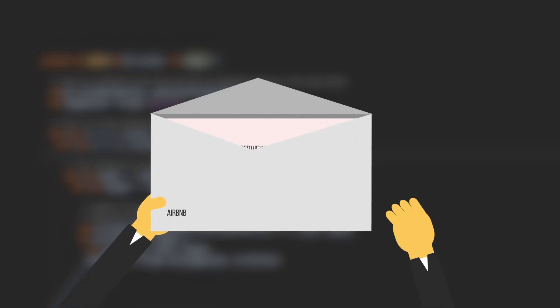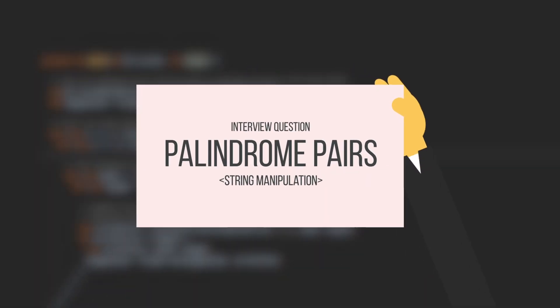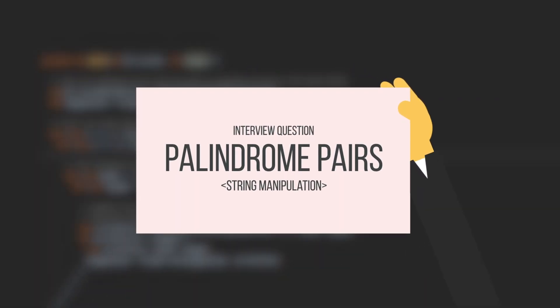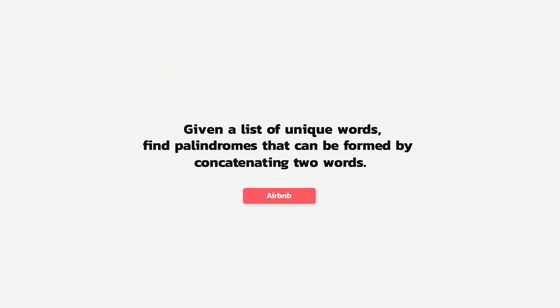Hey everyone, today we'll go over an Airbnb interview question together. I got this question from Airbnb roughly a week or two ago. Today's question is: given a list of unique words, find palindromes that can be formed by concatenating two words.